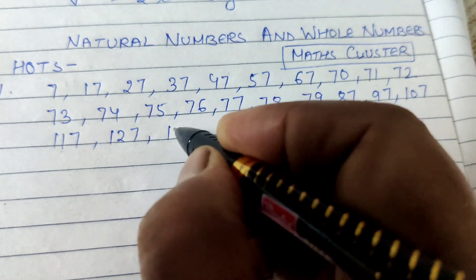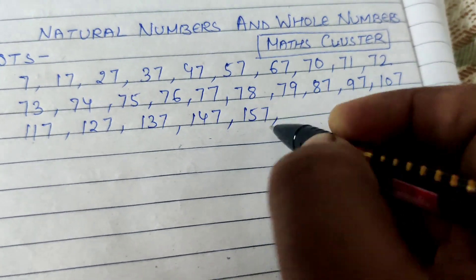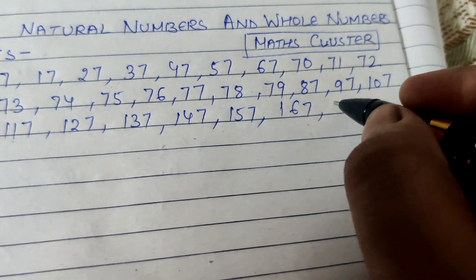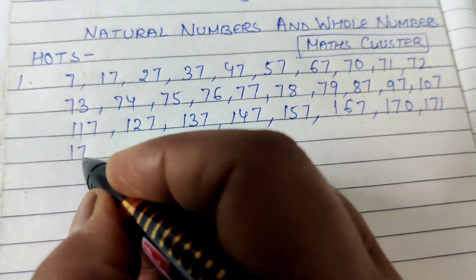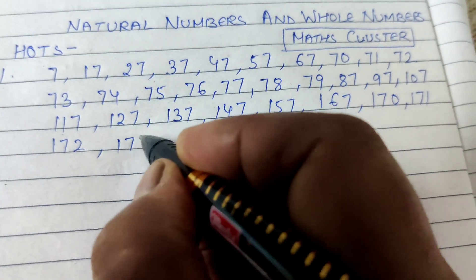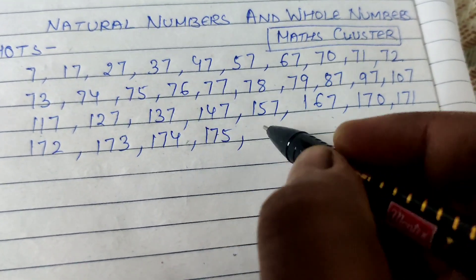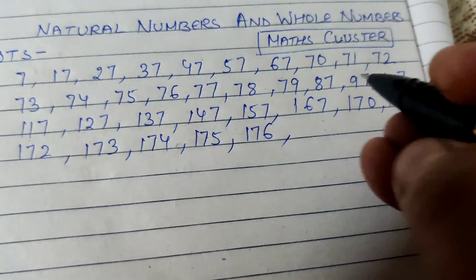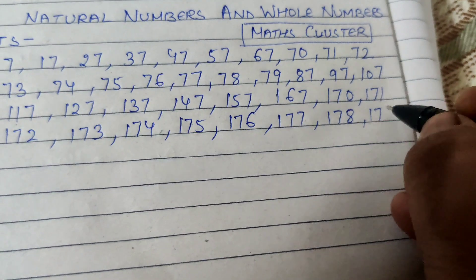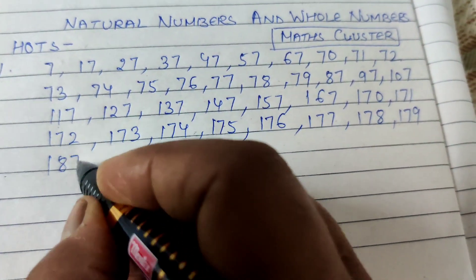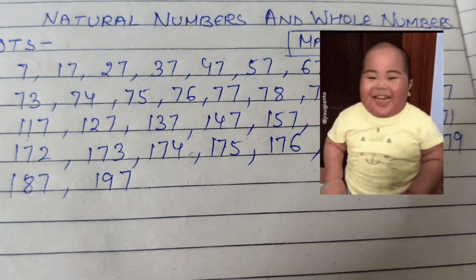137, 147, 157, 167. Then 170, 171, 172, 173, 174 — continuing through 177, 178, 179. Then 187, 197. Count all of these to get the answer.